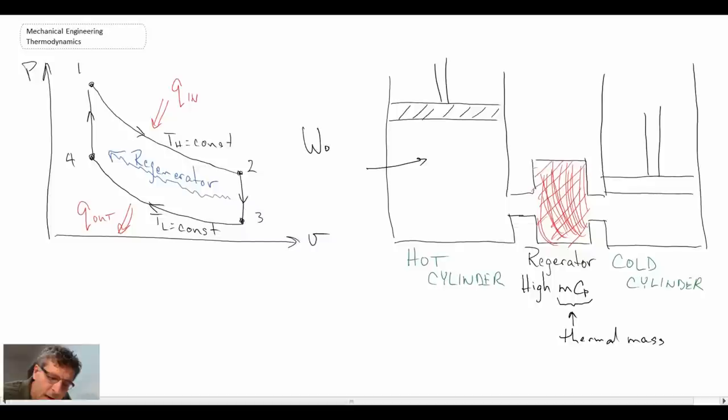Now the working fluid that you'll be dealing with, you can have many different working fluids, but common ones that are used for Stirlings are helium and hydrogen. You can also use air. Although helium and hydrogen will yield the highest thermal efficiencies for practical operation.